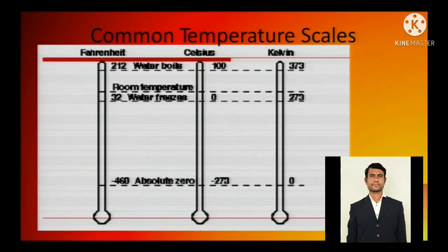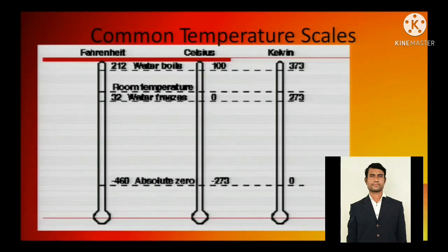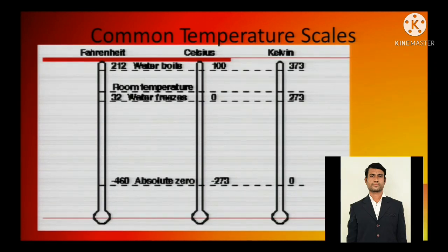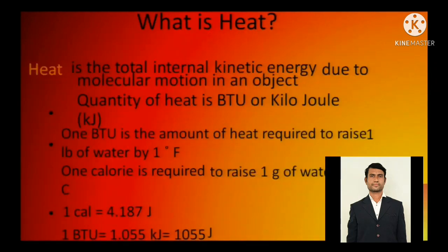Absolute zero is minus 273 degrees Celsius, which is 0 Kelvin and minus 460 degrees Fahrenheit. These are basic things we all know. I am just discussing the basics right now.